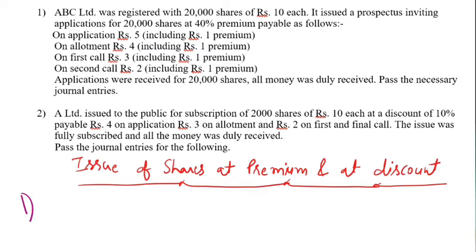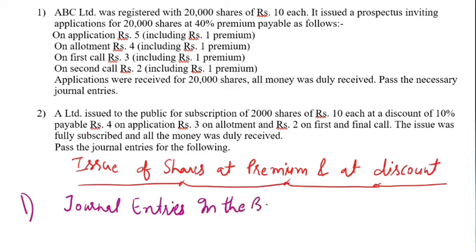First we will write the format for journalizing: date, particulars, LF, amount debit and credit. We will write the heading — Journal Entries in the books of ABC Limited.